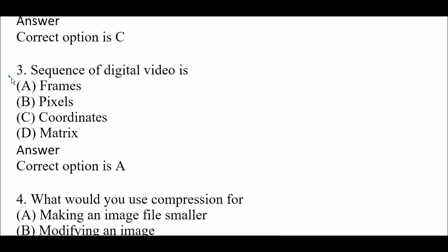Next question: A sequence of digital video is — Option A: frames, Option B: pixels, Option C: coordinates, Option D: metrics. The right answer is Option A, frames. A sequence of digital video is made of frames, not pixels, coordinates, or metrics. This is a very important question.